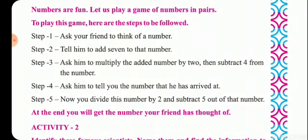Step 1: Ask your friend to think of a number. Step 2: Tell him to add 7 to that number. Step 3: Ask him to multiply the added number by 2, then subtract 4 from the number.